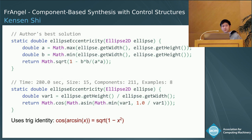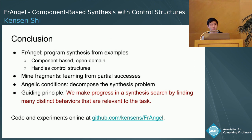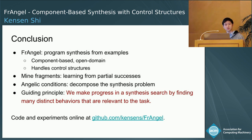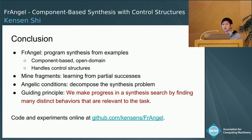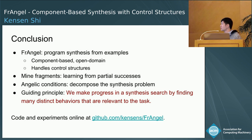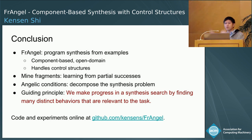In conclusion, I've presented Frangel, which is a Java program synthesizer that can use control structures and arbitrary libraries. It does this with two key strategies: it mines fragments so that it can learn from partial successes, and it uses angelic conditions to decompose the synthesis problem when control structures are involved. These two strategies allow Frangel to take known behaviors and manipulate them to create new behaviors, making rapid progress in the synthesis search. All of the code and experiments are available online. Thanks, and I'm happy to take questions.